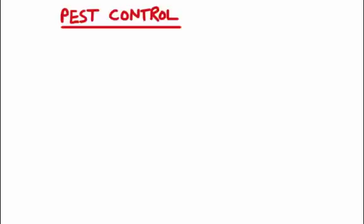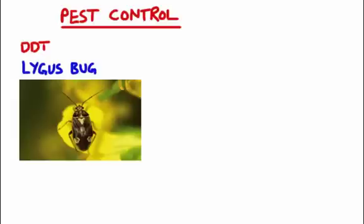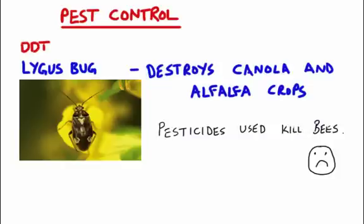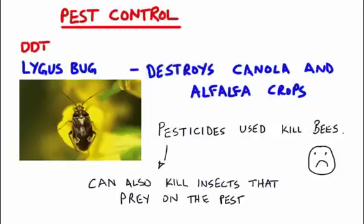Another way humans affect the environment is through pest control. We talked in topic 2 about DDT and its harmful effects on the peregrine falcon. Here we want to talk about the lygus bug, an insect that feeds off alfalfa and canola crops and destroys them. We can control it by spraying pesticides, but those pesticides will also kill things like bees. They can also harm the predators of the lygus bug — other insects that eat it — and without those predators, the lygus bug population actually increases.